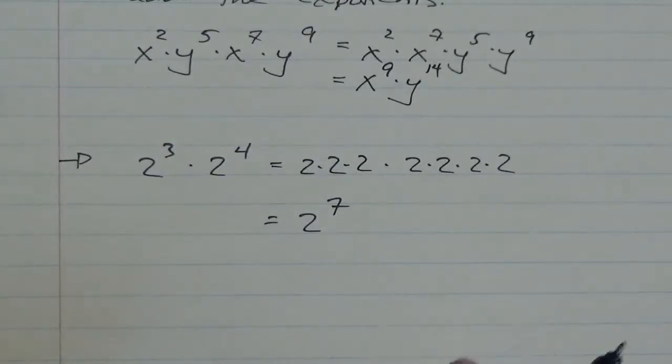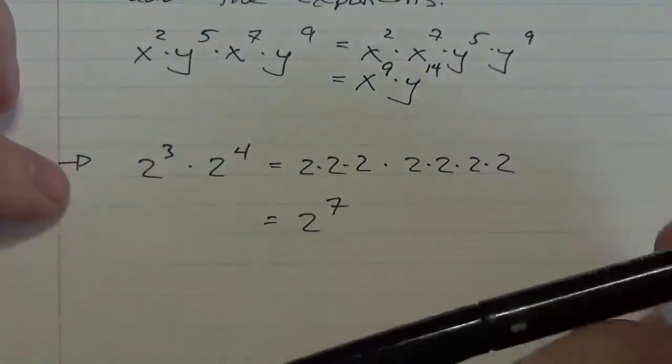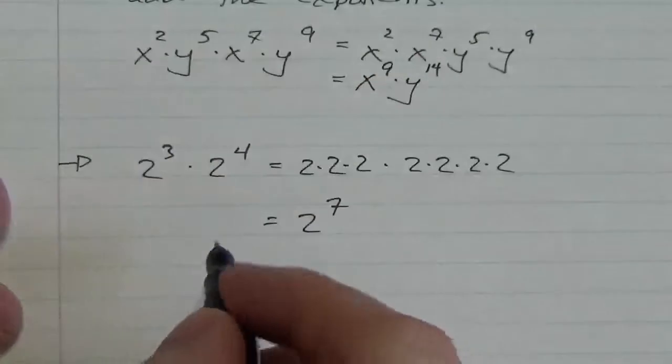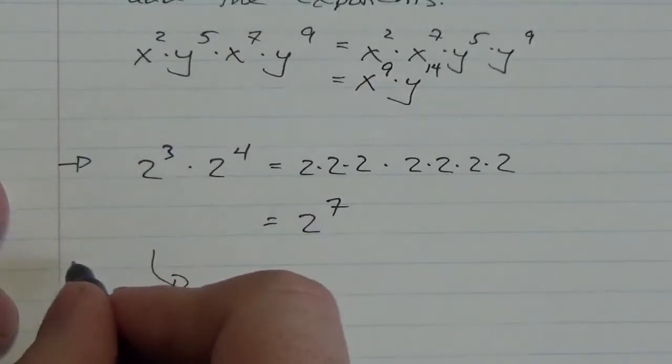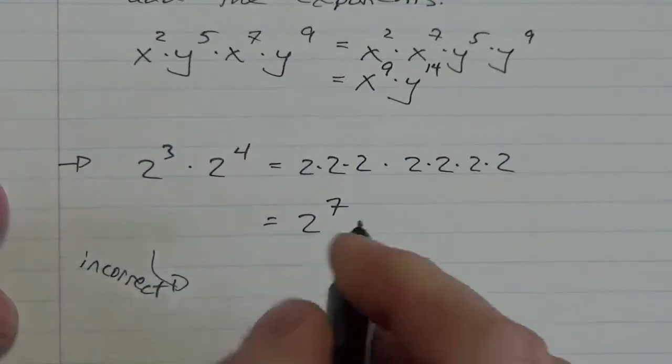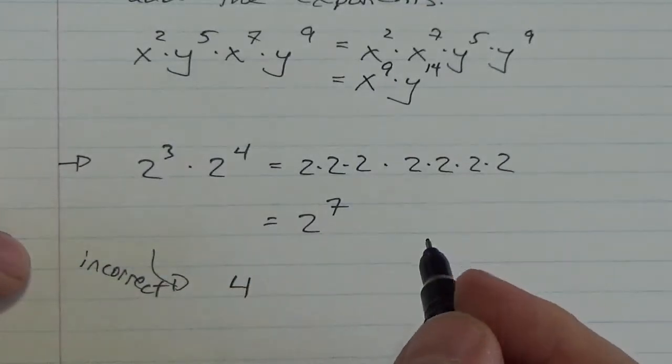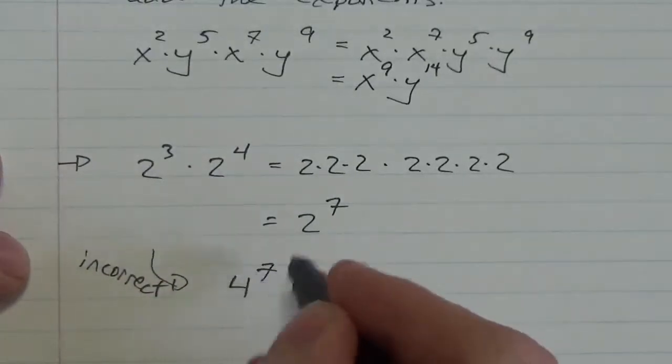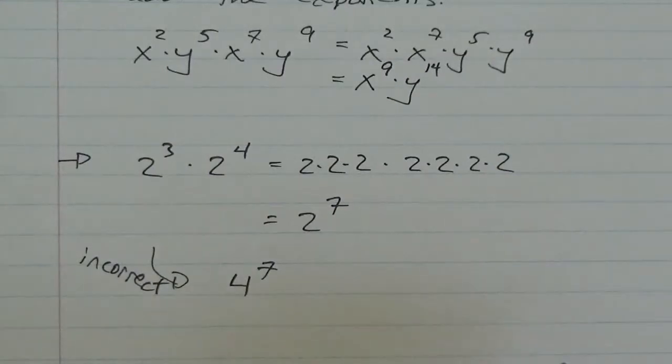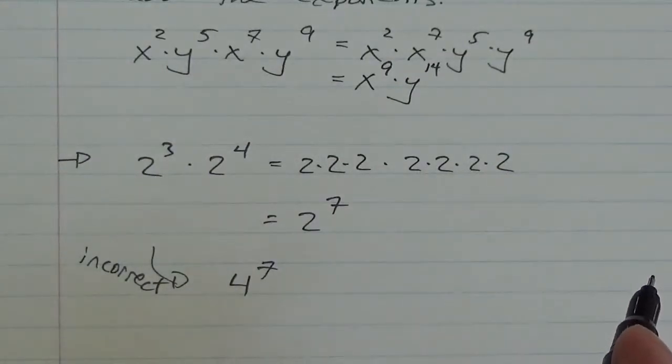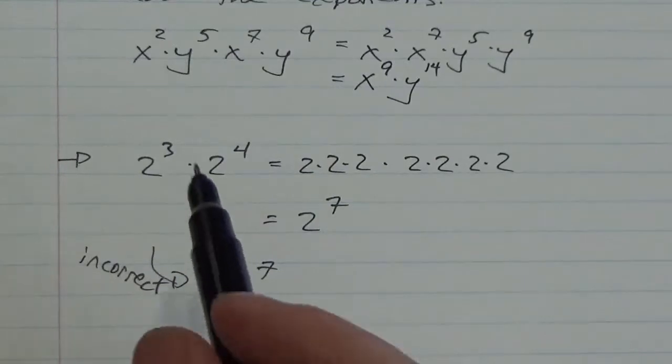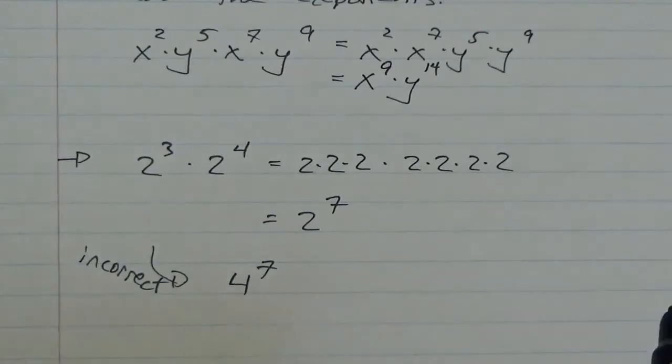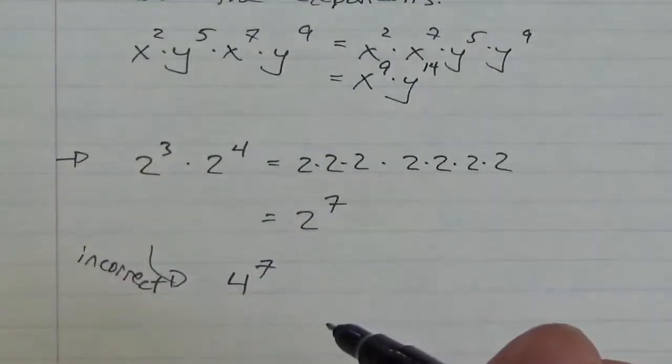Now, where the confusion comes in here is as soon as I put a two down there in the base, as soon as I give a base here, there is a temptation. There is a temptation and this is incorrect. Before I even write it, this is going to be incorrect to make the base four. To go two times two is four. And then you put the exponents together or something like that. You do at that point, it doesn't even matter what you do to the exponents because the base is incorrect. You've misunderstood that. That is not the way that works there.